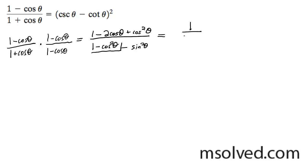I'm going to get 1 over sine squared theta minus 2 cosine theta over sine squared theta plus cosine squared theta over sine squared theta.